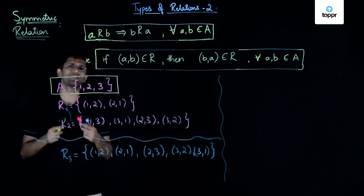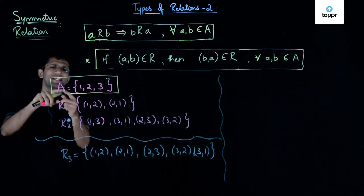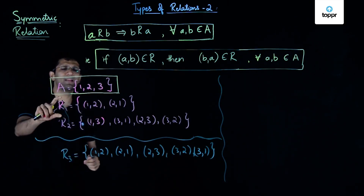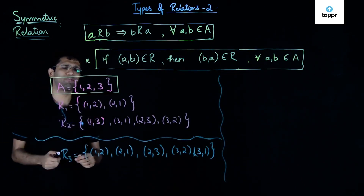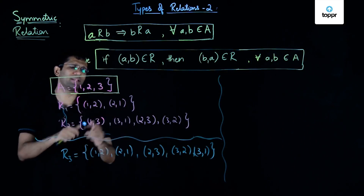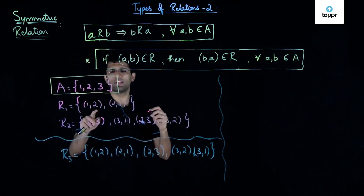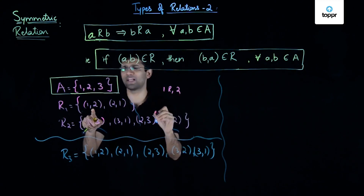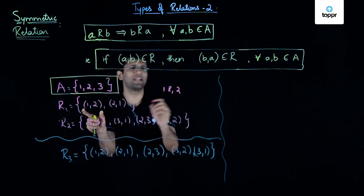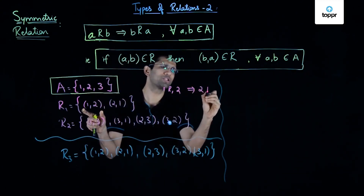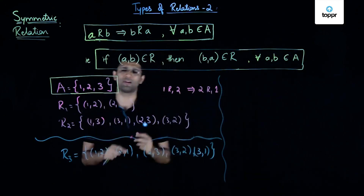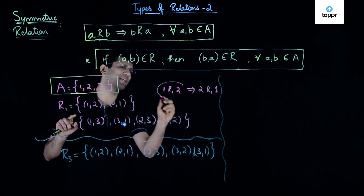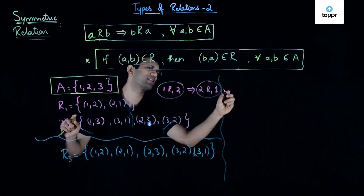Let us understand this by means of an example. Suppose we have a set A consisting of elements 1, 2, and 3, and we have a relation R1 consisting of ordered pairs (1, 2) and (2, 1). If 1 is related to 2 by relation R1, then that should imply 2 is also related to 1 by R1. Looking at R1, you will realize that this implication is satisfied.